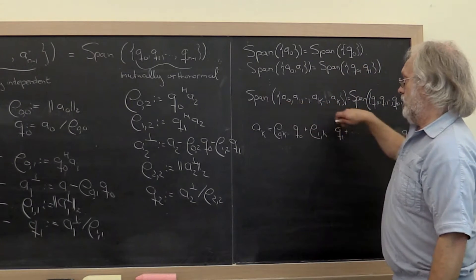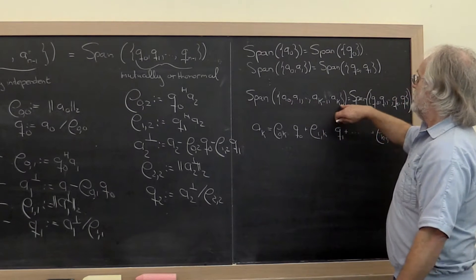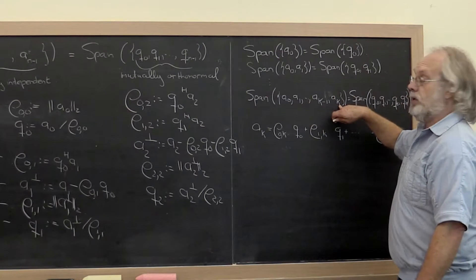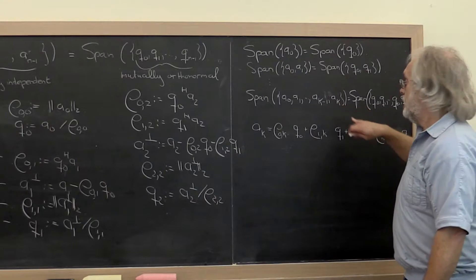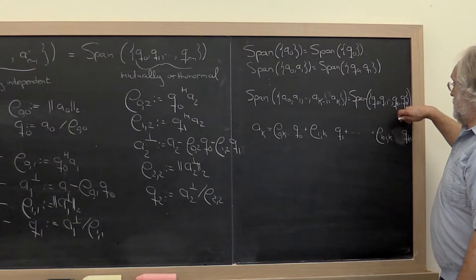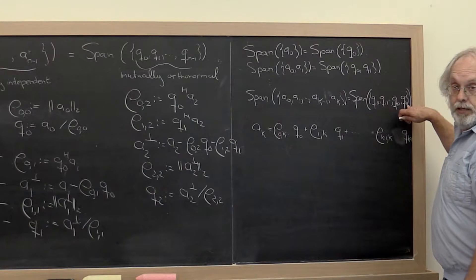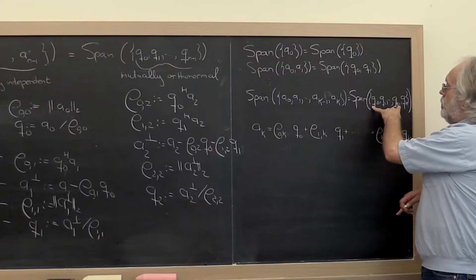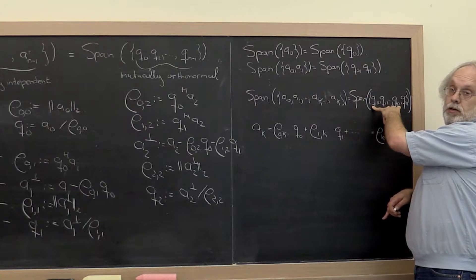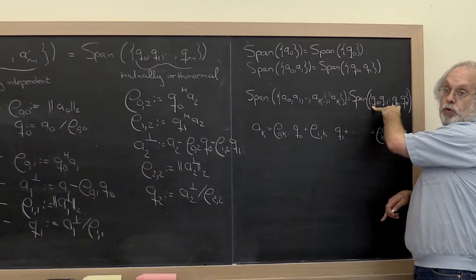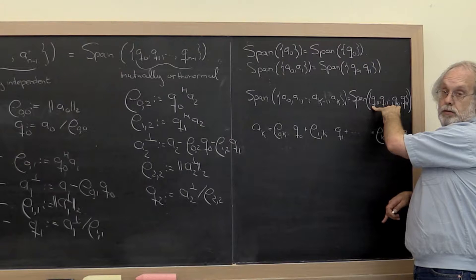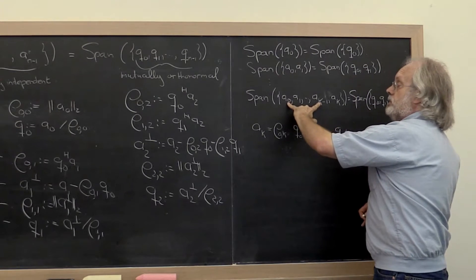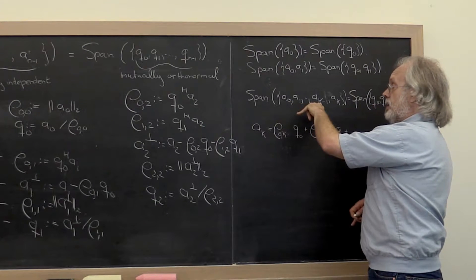So in general, you can say, well, by the time you reach the column index with k and you want to compute vector Q index with k, you already have computed all the prior vectors Q0 through Qk minus 1 from vectors A0 through Ak minus 1.